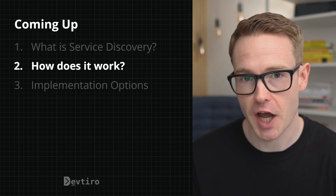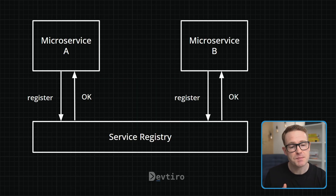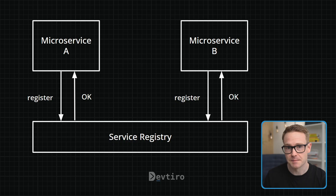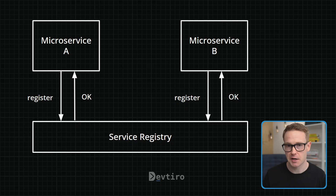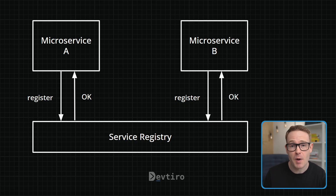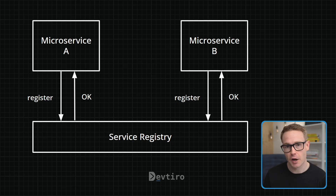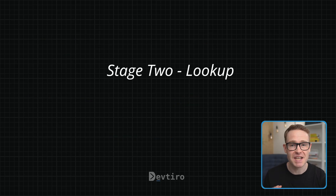At a high level, service discovery is a two-stage process: first registration, then lookup. In the registration stage, each microservice registers with a service registry. The service registry stores information such as the type of the microservice that's registering and also its network address. In this way, we can have multiple instances of the same type of microservice registered but available at different network addresses.